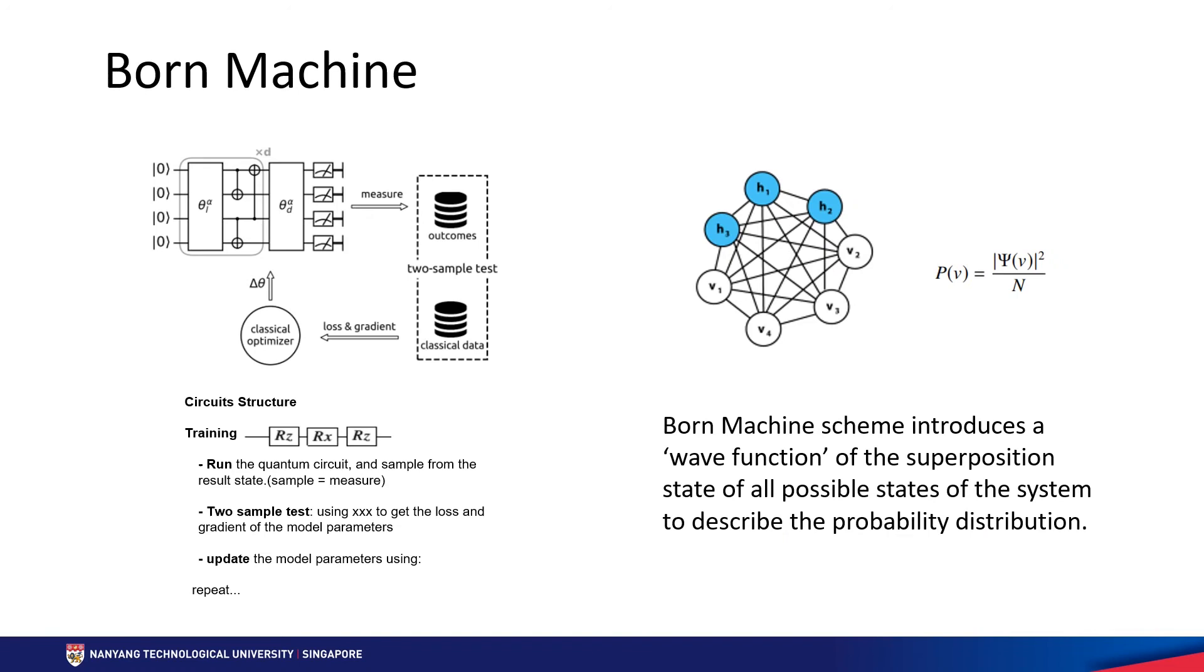Born machine is a derivation of quantum Boltzmann machine, which is designed to deal with classical data with a quantum circuit. Similar to the energy function in Boltzmann machine, Born machine's scheme introduces a wave function of the superposition state of all possible states of the system to describe the probability distribution.